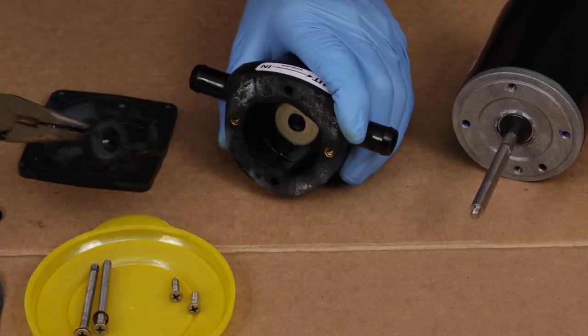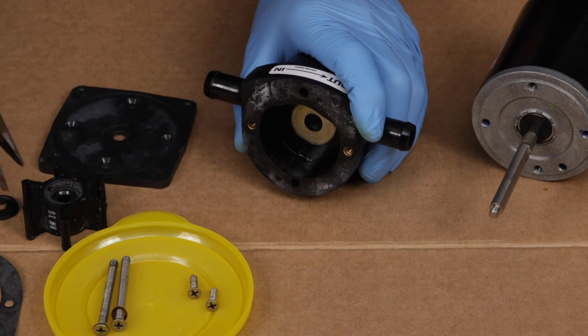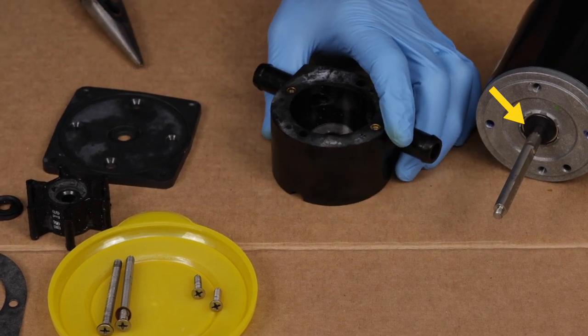Then remove the flexible impeller from the body and the gasket. Note that the slinger on the shaft and closest to the motor stays in place.